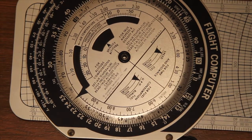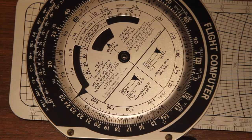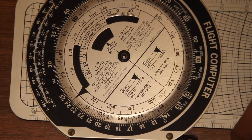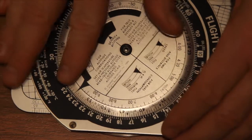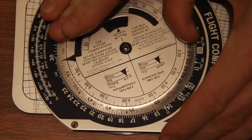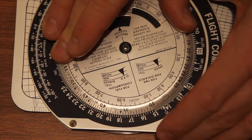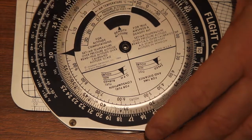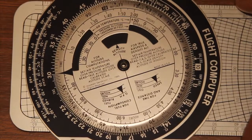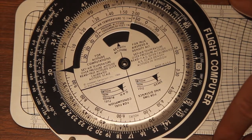So another example. Let's say we want to do 250 divided by 5. So we come across here to 250. We need to move the 5 around to under the 250, and then we read off on the 10. So the 10 is around here. So 250 divided by 5 equals 50.